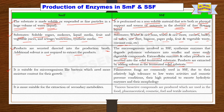In the case of SMF, it is suitable for microorganisms like bacteria, which need more moisture content for their growth. Whereas in SSF, filamentous fungi are commonly used due to their relatively high tolerance to low water activities and osmotic pressure conditions, as well as their high potential to secrete hydrolytic enzymes and their favorable morphology.